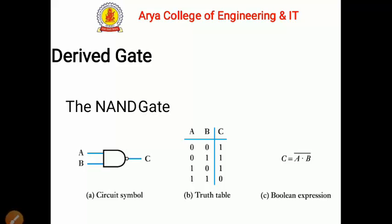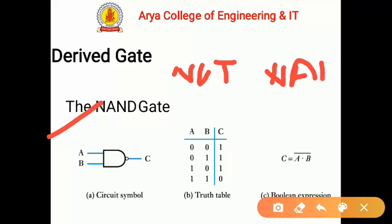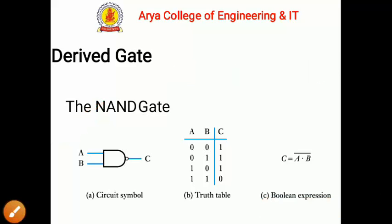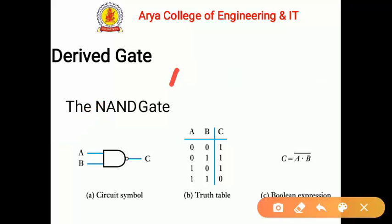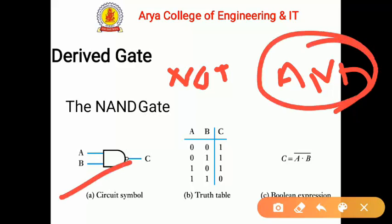Now we will discuss derived gates — how we derive different gates from the basic gates. The first derived gate is the NAND gate. NAND stands for NOT-AND; it is derived from NOT and AND. The NAND gate has just the opposite, or complemented, output of the AND gate.